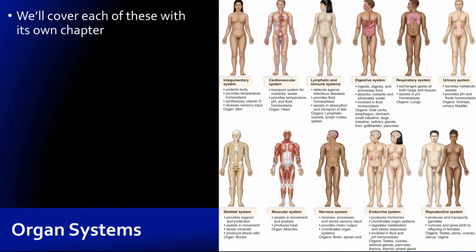This chapter also mentions organ systems, and it's important to look at that table in your book — it gives you an idea of the things we'll cover throughout the semester. The integumentary system, which we just covered, does many important things: it protects our body as an outer wrapper, provides temperature homeostasis through subcutaneous fat that keeps us warm and sweating that cools us down, synthesizes vitamin D essential for calcium metabolism, and provides sensory input from the outside world.